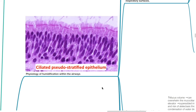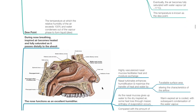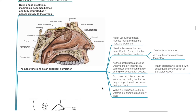Physiology of humidification within the airways. During nose breathing, inspired air becomes heated and fully saturated as it passes distally to the alveoli. The nose functions as an excellent humidifier. Highly vascularized nasal mucosa facilitates heat and moisture exchange. Nasal turbinates enhance humidification and maximize the transfer of heat and water by their high available surface area and by altering the characteristics of airflow. As the nasal mucosa gives up water to the dry inspired air, some heat loss through the latent heat of evaporation occurs. Warm expired air is cooled with subsequent condensation of the water vapor.